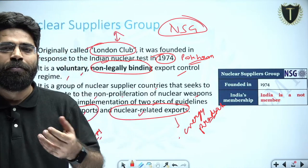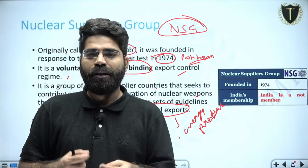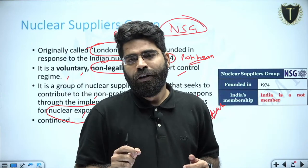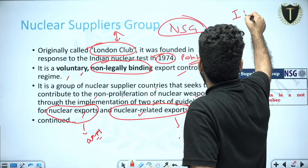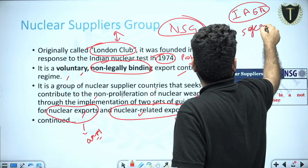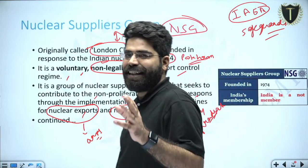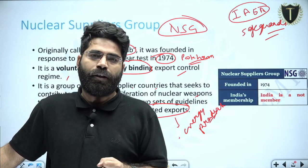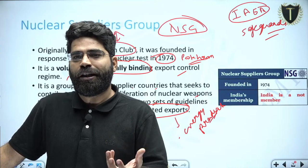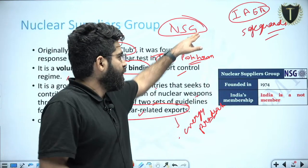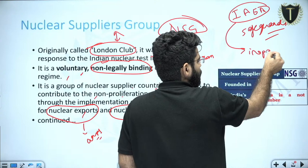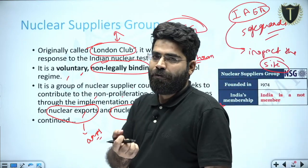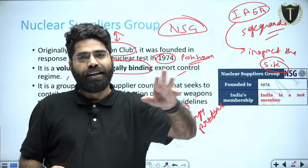This is why we have the IAEA — the International Atomic Energy Agency — and its safeguards. IAEA ensures that if a country states it will use nuclear material only for peaceful purposes, but is actually enriching material for nuclear weapons, the IAEA will inspect the sites and check whether uranium or other nuclear fuel is being used for energy purposes or for weapons. That is the work of the International Atomic Energy Agency.